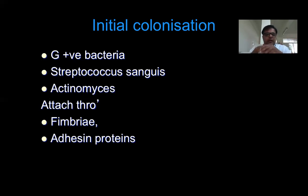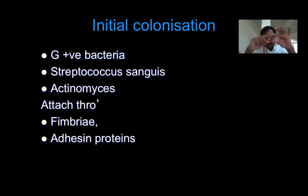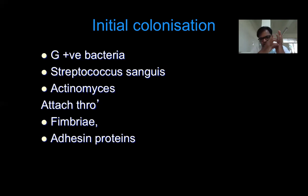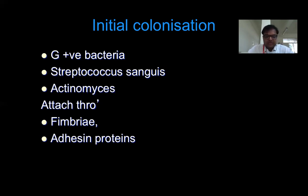The bacteria that come and attach first are the initial colonizers. They are primarily gram-positive bacteria — specifically Streptococcus sanguis and Actinomyces species. These bacteria have very important structures called fimbriae — small filament-like projections on the exterior of the cell wall, like small tentacles. Using these fimbriae, the bacteria attach onto the tooth surface. Without fimbriae, the bacteria cannot attach to the tooth surface, the salivary glycoprotein, or the acquired pellicle.